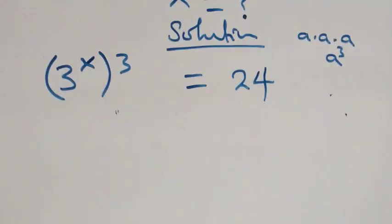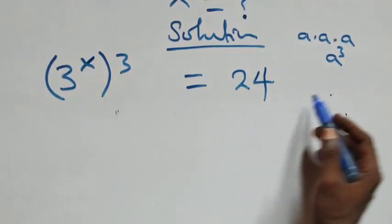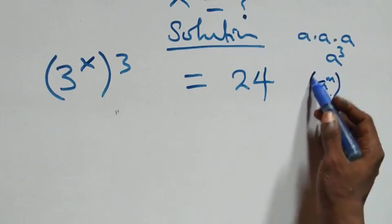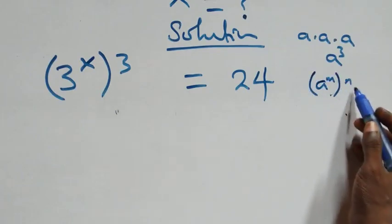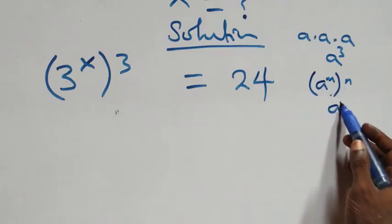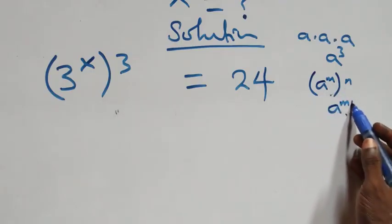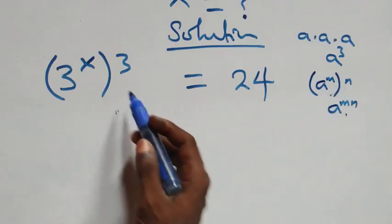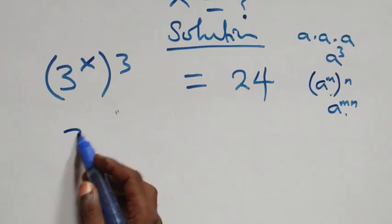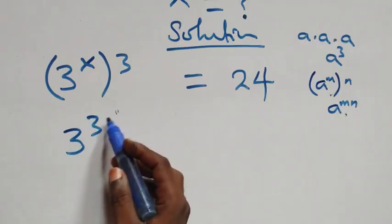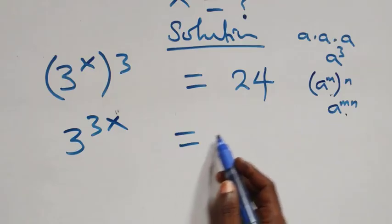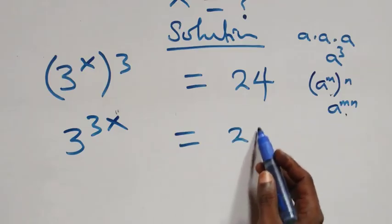Also here it follows when we have a raised to power n, raised to power n — this becomes a raised to power n, and this power multiplies. So we have 3 raised to power 3x equals to 24.